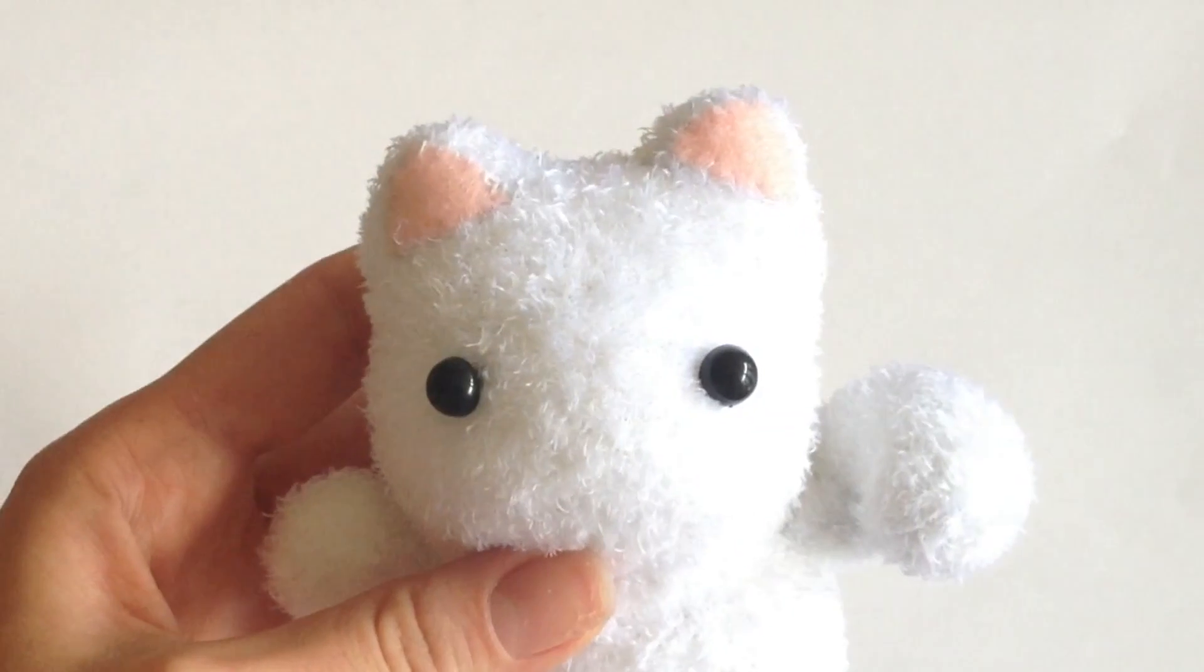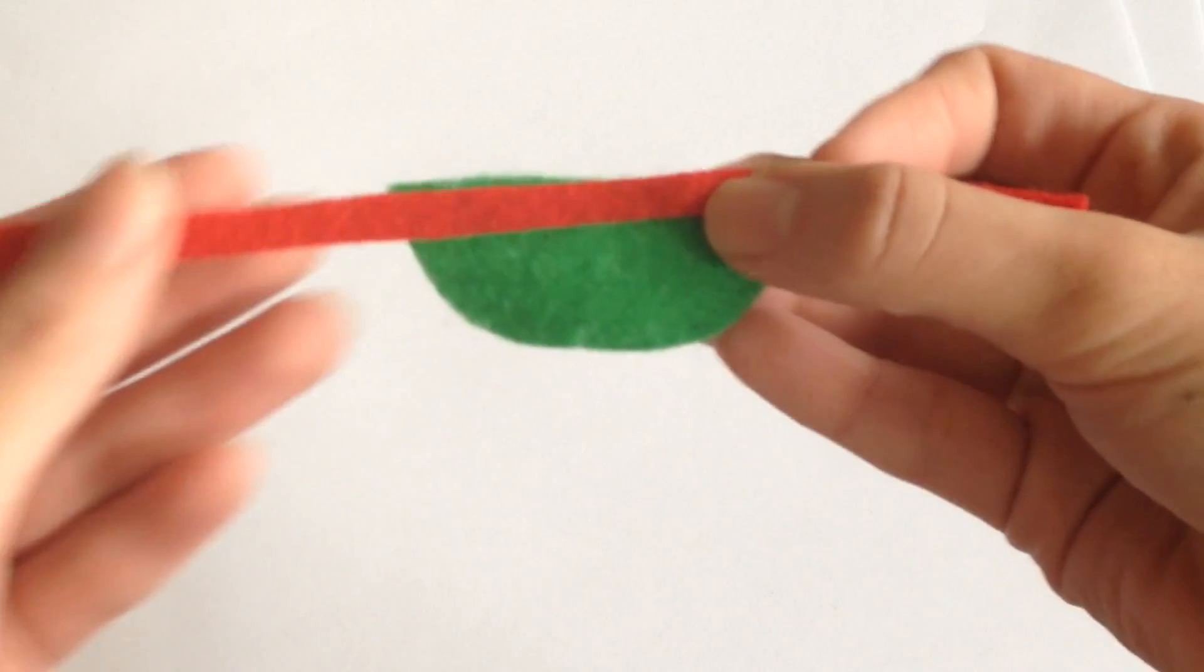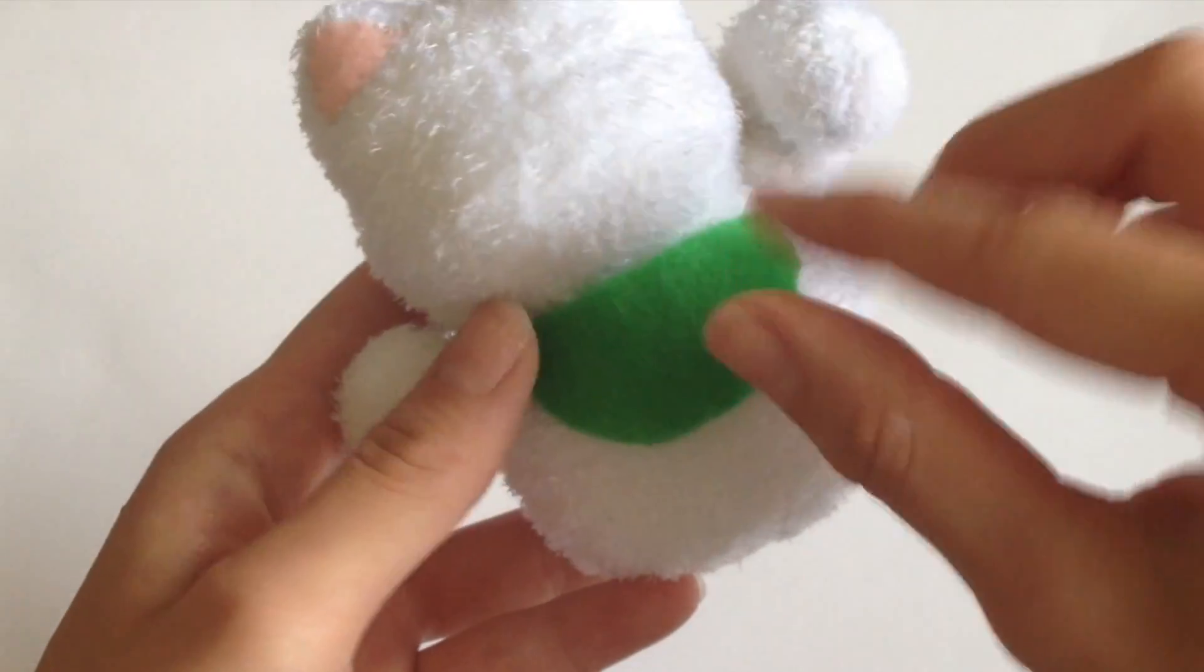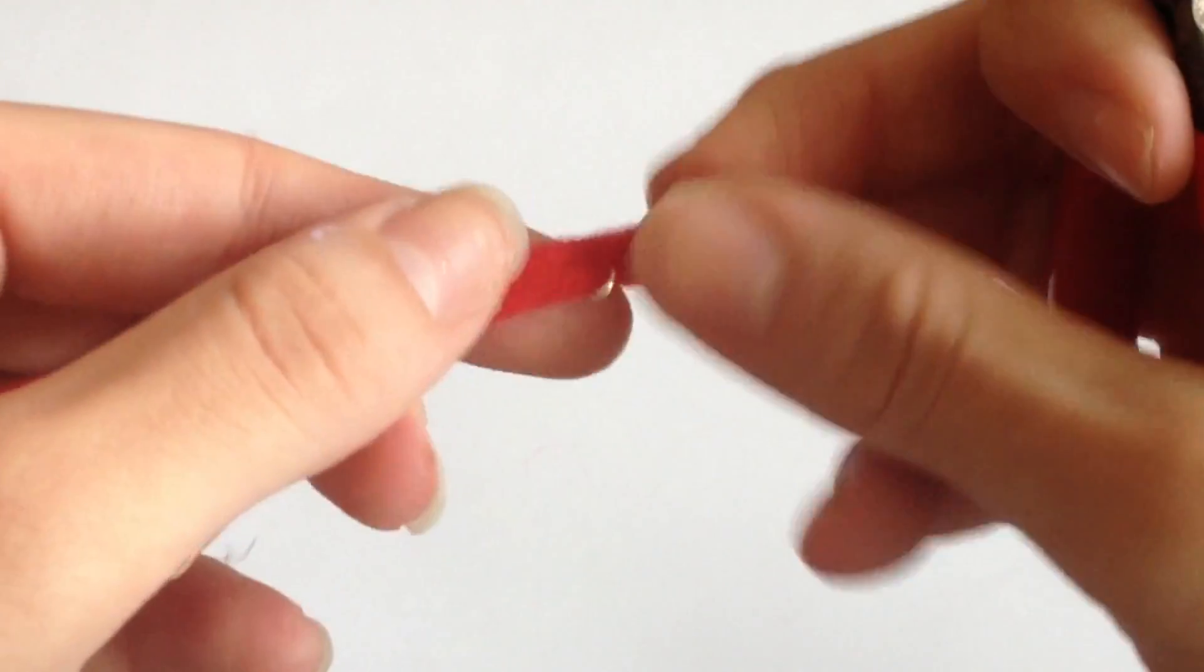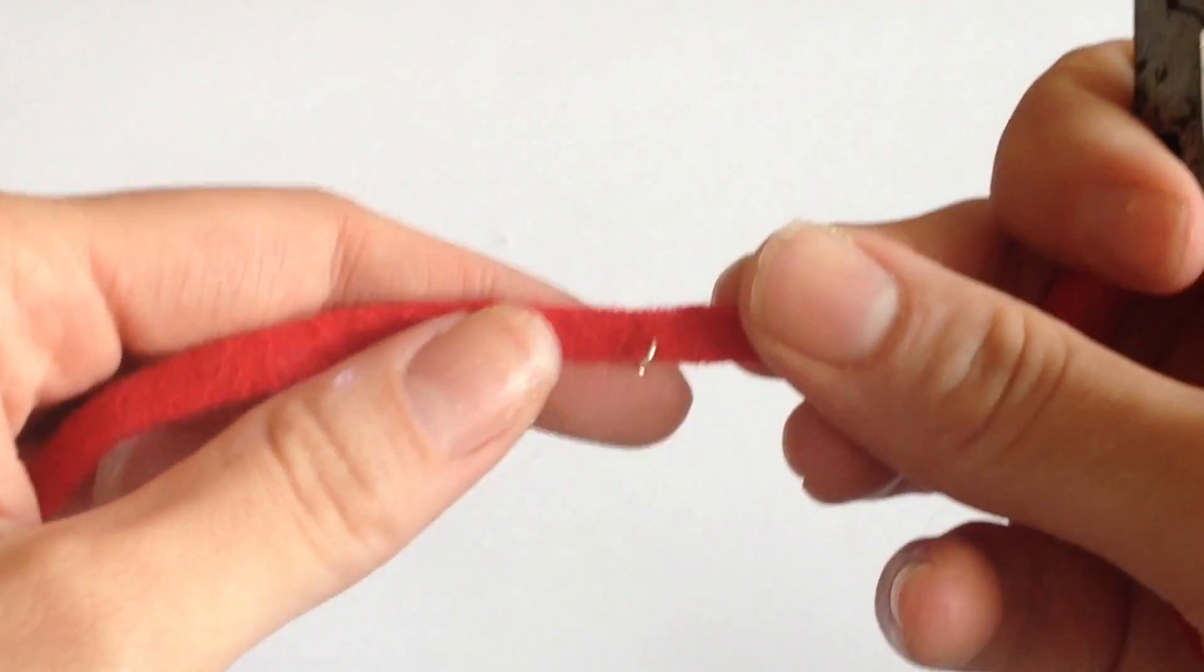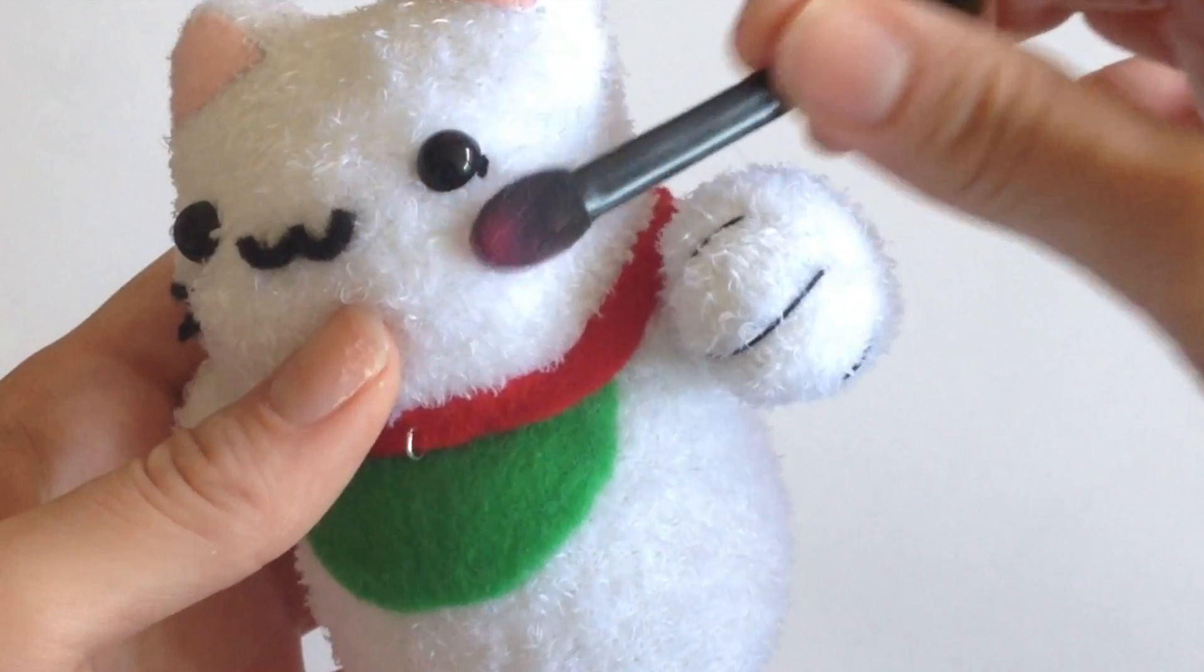Now there are a lot of different types of Maneki Neko's. I'm just going to do the classic one that has the green bib and the nice little red collar, so I just took some felting fabric and cut these into the nice shape. I placed a nice little ring into the red collar so that's where my bell is going to hang, and I super glued both of these pieces onto my cat.